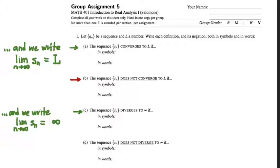One of the hardest things in an analysis course is to really wrestle, as we're going to do today, with the definition of what it means for a sequence of numbers to converge to a limit. This is the first time we're really meeting a calculus topic head-on in our course, and our course is supposed to be about unpacking the foundations of calculus. So this is a big deal, which means I don't want to rush through it.